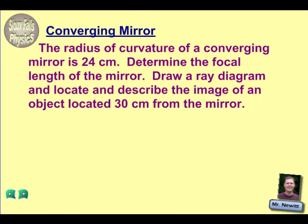Okay, this problem is going to talk about a converging mirror. It says the radius of curvature of a converging mirror is 24 centimeters. First thing it asks us to do is to determine the focal length of the mirror. And then once we have that, we are to draw a ray diagram, locate and describe the image that is 30 centimeters from the mirror.